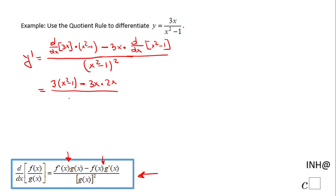And the denominator stays like that: x squared minus 1 squared. We can do some simplification here.